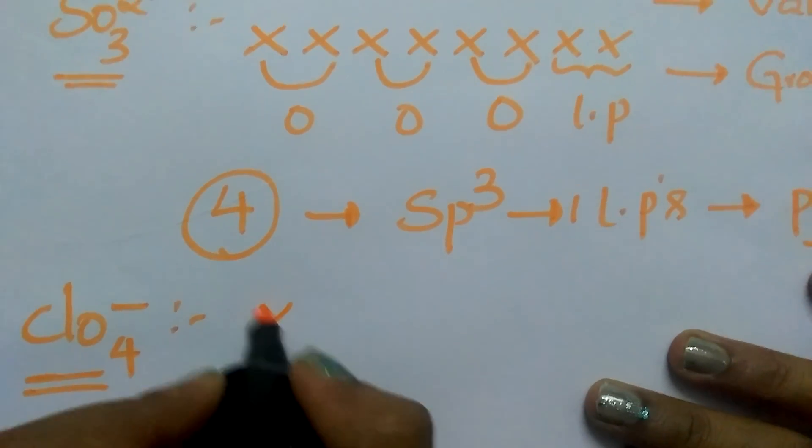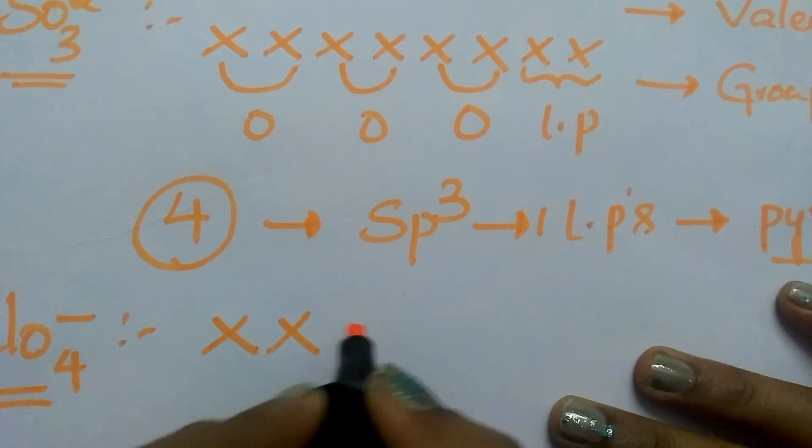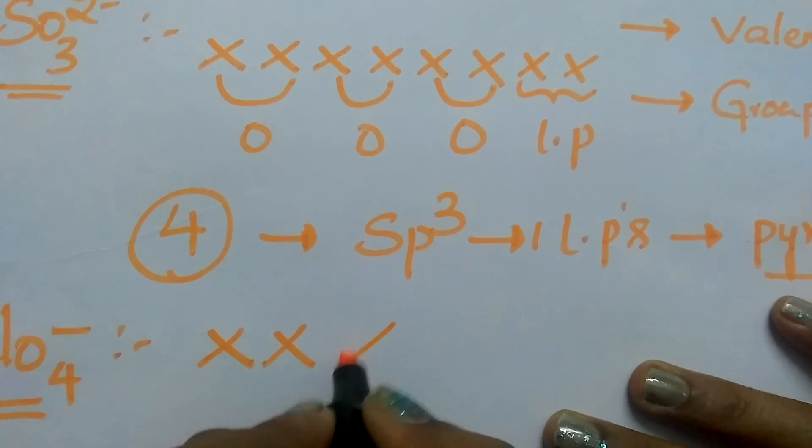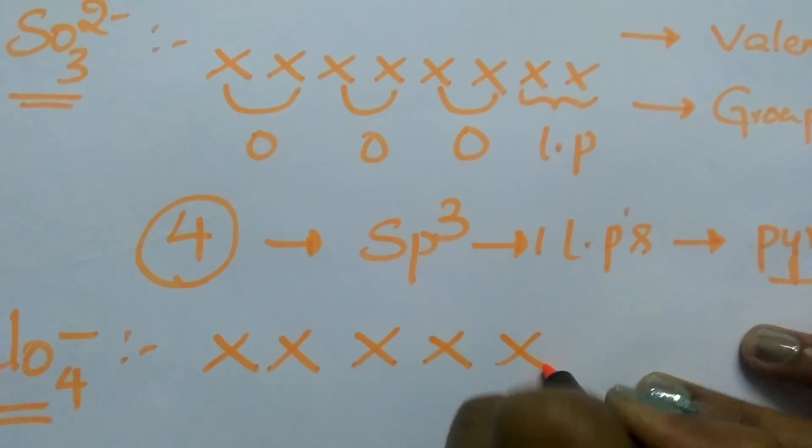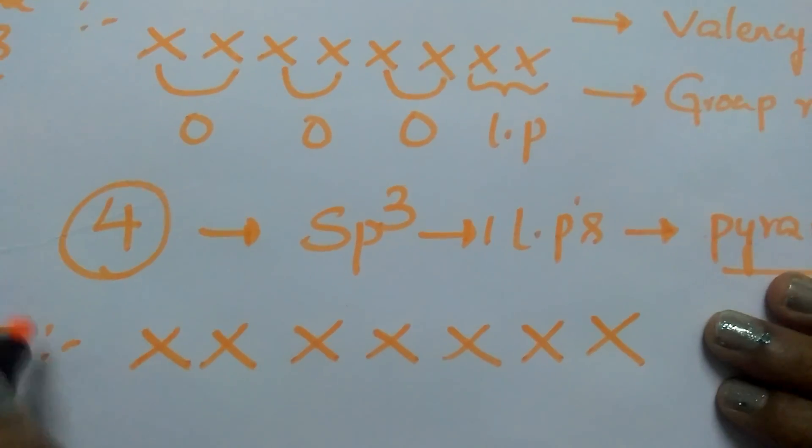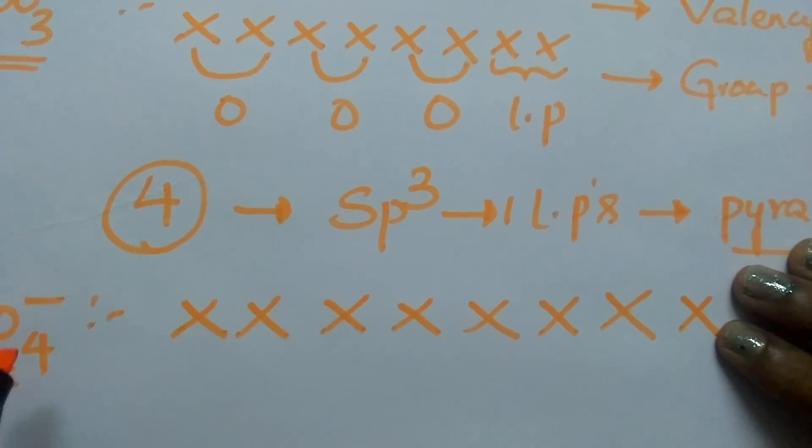Chlorine belongs to 7th group. So write 7 electrons: 1, 2, 3, 4, 5, 6, 7. It is having minus charge, 1 electron right here.